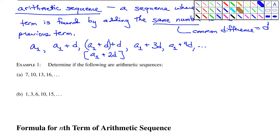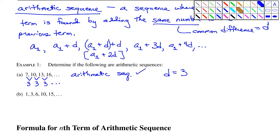Example 1: determine if the following are arithmetic sequences. A sequence is arithmetic if every time you take the difference between two consecutive terms, you get the same common difference. The difference between 7 and 10 is 3, 10 to 13 is 3, 13 to 16 is 3 — so yes, this is an arithmetic sequence with common difference 3. In part B, the differences are 2, 3, 4, 5 — all different — so this is not arithmetic.